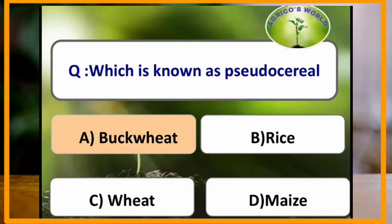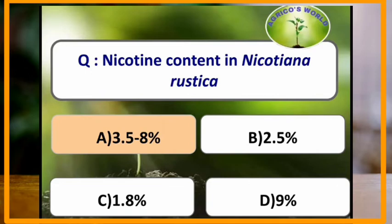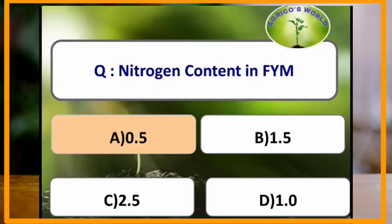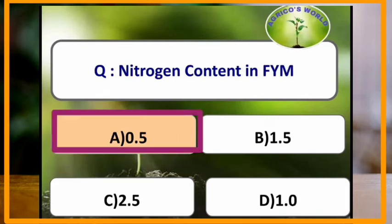Which is known as pseudo cereal? Buckwheat is known as pseudo cereal. Nicotine content in Nicotiana rustica is 3.5 to 8%. Tokyo is a variety of buckwheat. Nitrogen content in FYM is 0.5%.